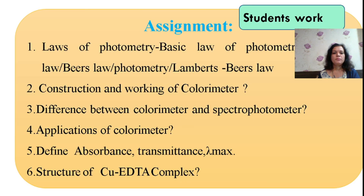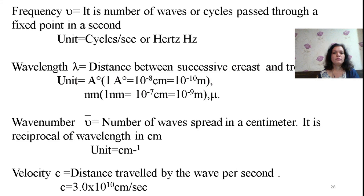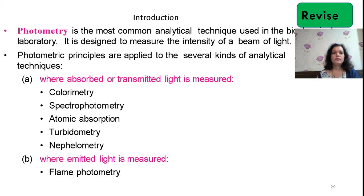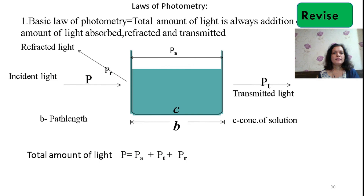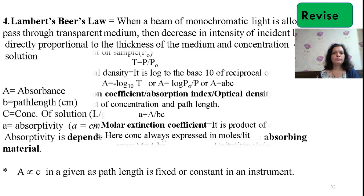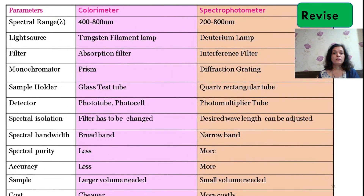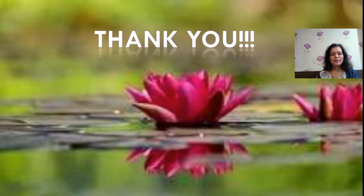This is a small assignment provided to you, which will be very useful to answer oral questions. This is study material to revise the basic principle of the instrument you are going to utilize for this experiment — revise the basic laws of photometry, terms utilized in photometry, deviations, and the comparison of spectrophotometer and colorimeter. Thank you. Hope you have enjoyed and understood this particular experiment.